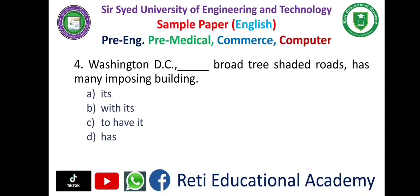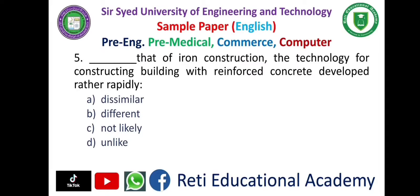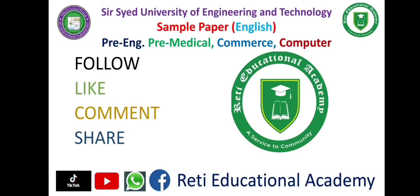No one is completely sure what causes booms and depressions in free economy. Question 4: 'Washington DC dash broad tree-shaded roads has many imposing buildings' — A. It is, B. With its, C. To have it, D. Has — and the correct answer is B. With its. Washington DC with its broad tree-shaded roads has many imposing buildings. Question 5: 'Dash that of iron constructions, the technology for constructions with reinforced concrete developed rather rapidly' — A. Dissimilar, B. Different, C. Not Likely, D. Unlike — and the correct answer is D. Unlike.